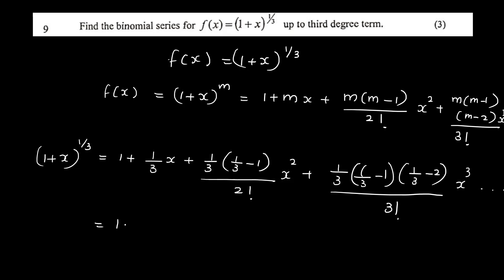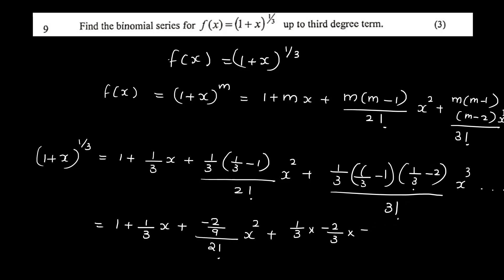That gives: 1 + (1/3)x + [(1/3)(−2/3) / 2!] x² + [(1/3)(−2/3)(−5/3) / 3!] x³ + etc. The coefficient of x² simplifies using (1/3)(−2/3) = −2/9, divided by 2.